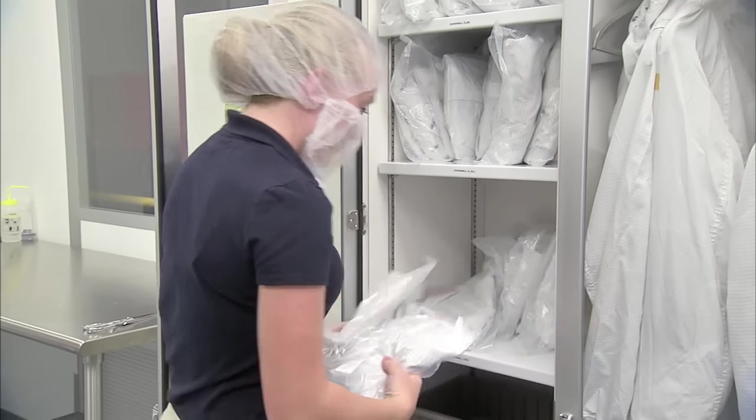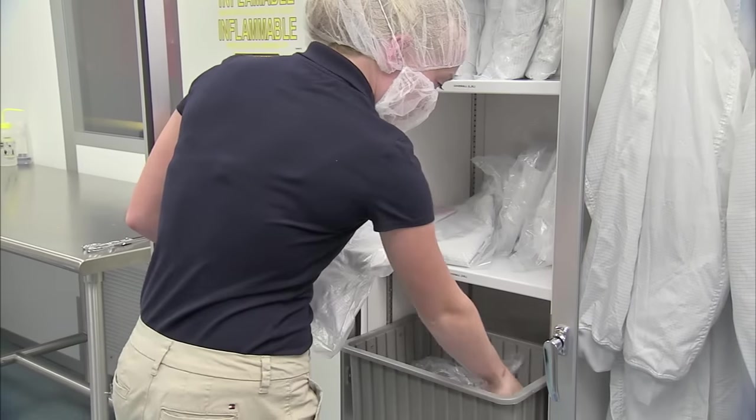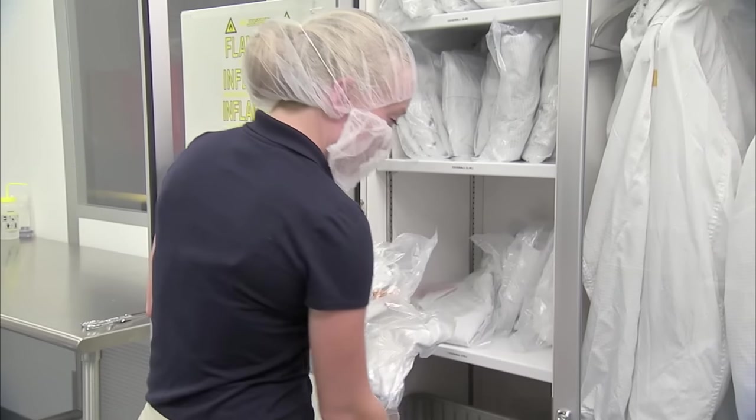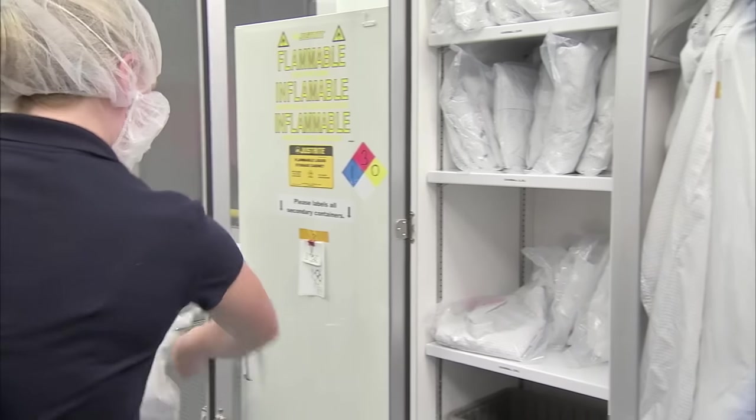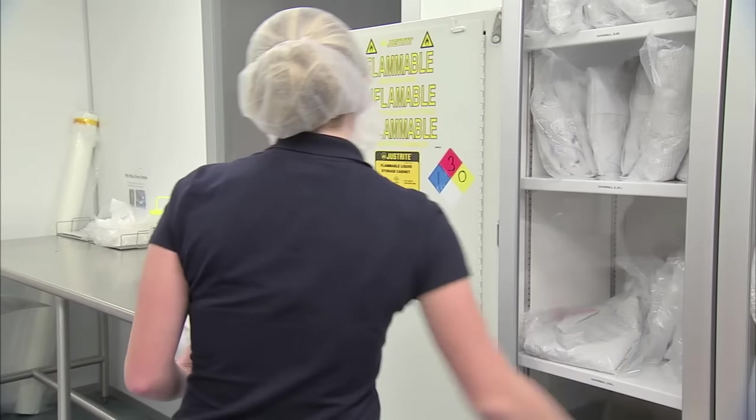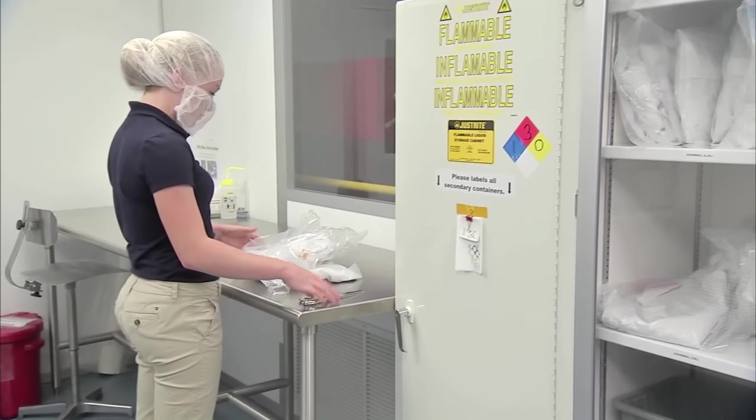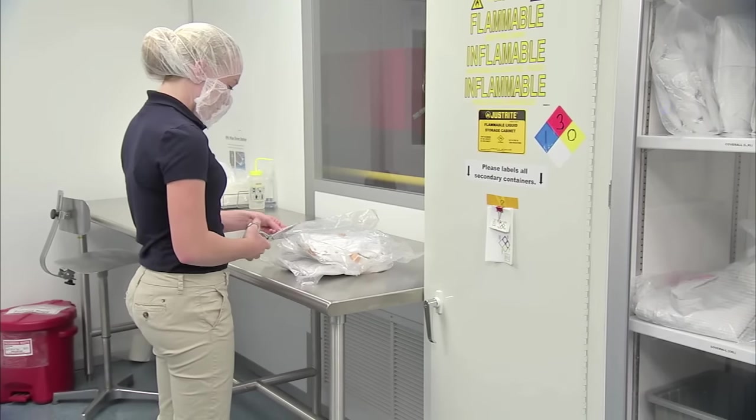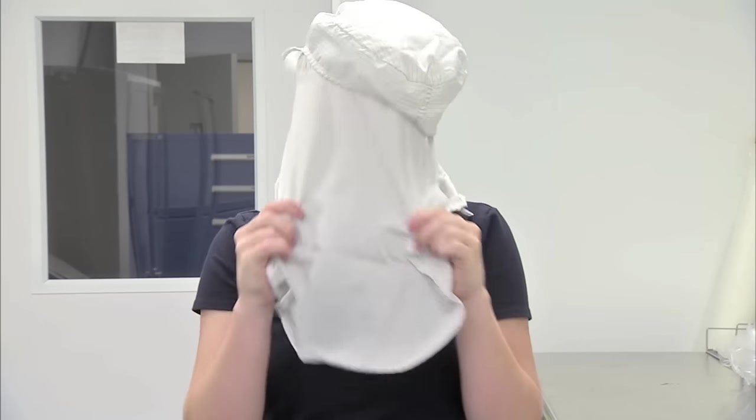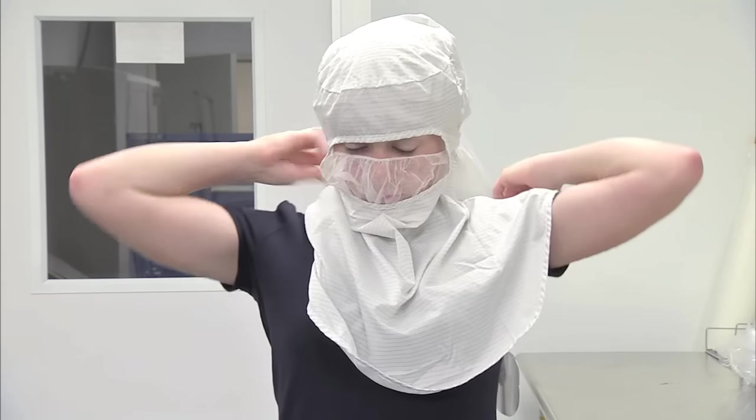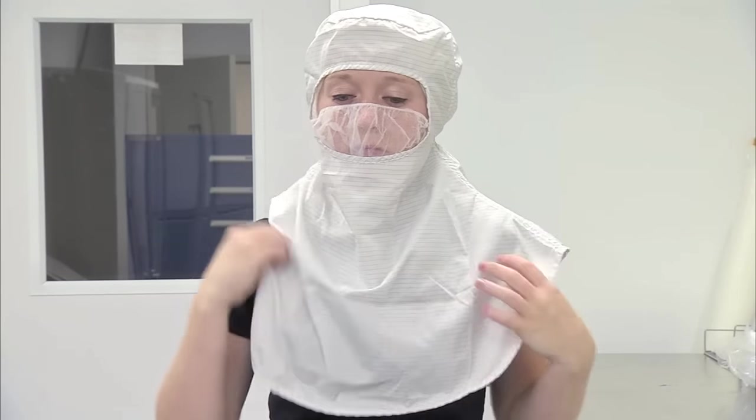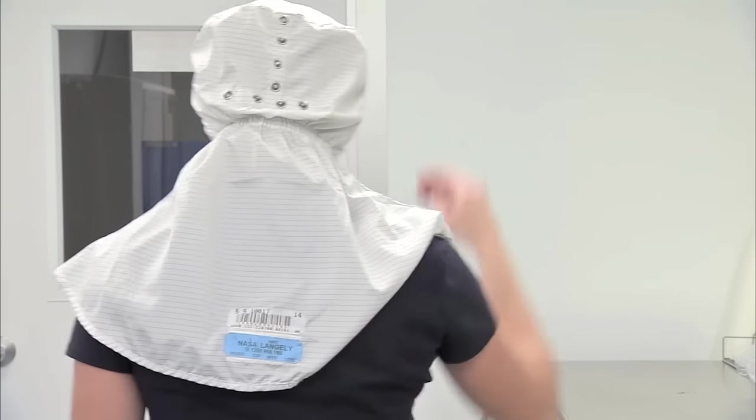The next steps are different for gowning up for an ISO class 5 or 6 clean room compared to an ISO class 7 or 8 clean room. Obtain a clean hood and open any bagging with scissors. Throw the old bag away. Place the hood over the head, on top of the bouffant cap and face mask. Adjust the cover using the buttons in the back if it does not fit properly.